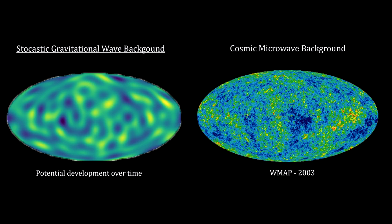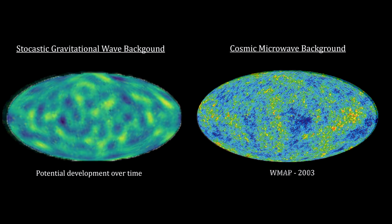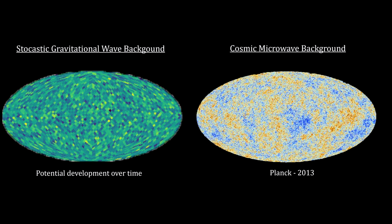Here's a set of possible stochastic background maps that could happen as detection methods improve over time. For reference purposes, I've included the maps that actually did happen with the cosmic microwave background.